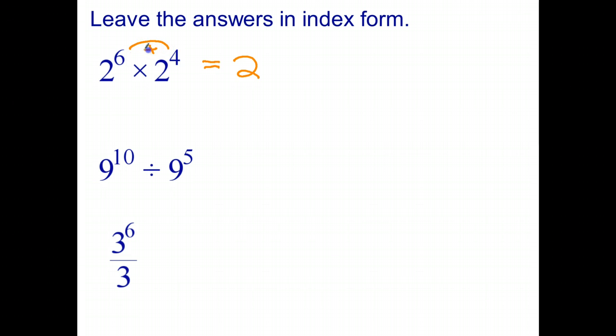To multiply powers with the same base, add the indices. So that's 2 to the 6 plus 4, which is 2 to the power of 10. To divide powers with the same base, both have a base of 9, we subtract indices.